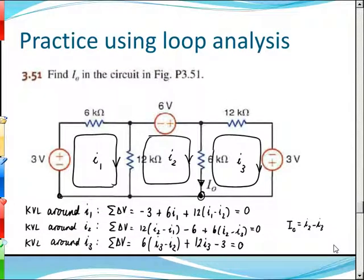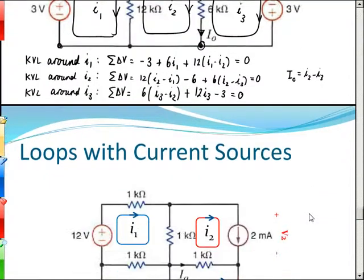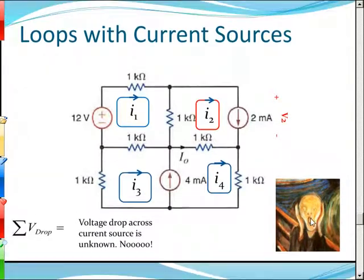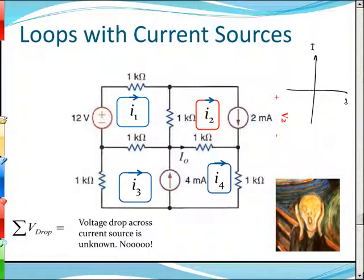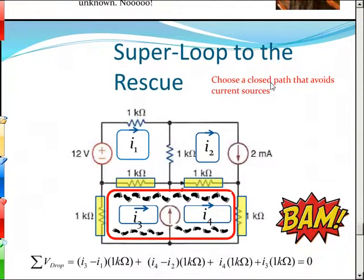What if we have an independent current source? How do we treat that for the voltage drop? If we have a loop with an independent current source, when walking around it, we don't know the voltage drop. The IV characteristics for a current source are a flat line — the voltage could be anywhere between plus and minus infinity. The solution is called a super path, or super loop.